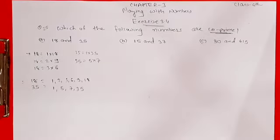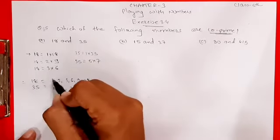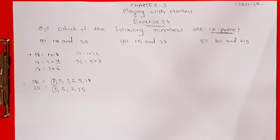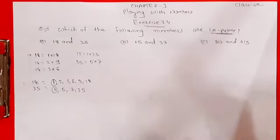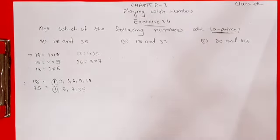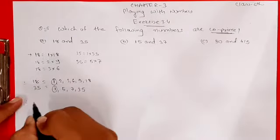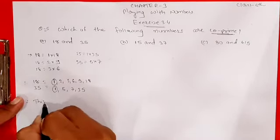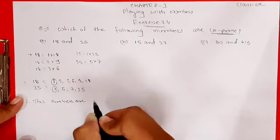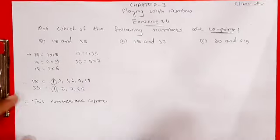Now students, you can see that the only common factor between 18 and 35 is 1. If the common factor of two numbers is only 1, we can say they are co-prime numbers. Therefore, these numbers are co-prime.